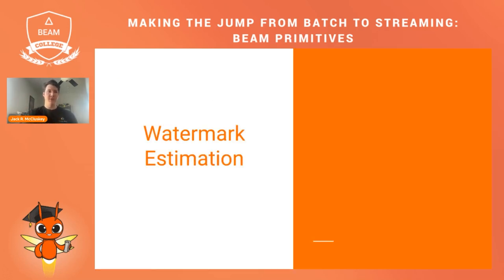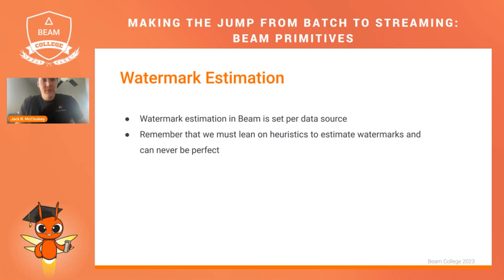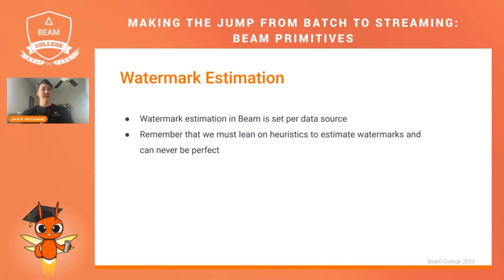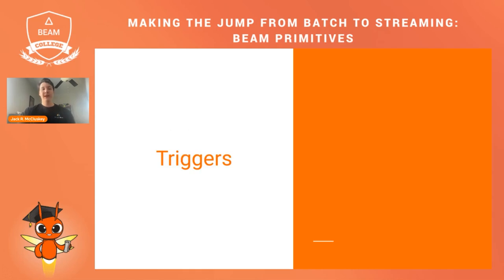Watermark estimation in Beam is set per data source — each has its own strategies and methods. We're leaning on heuristics to estimate watermarks and can almost never be perfect, as there are many reasons data can be late. You can set custom watermark estimation, but generally it's better to let Beam choose that per data source. What you can configure, however, are triggers.